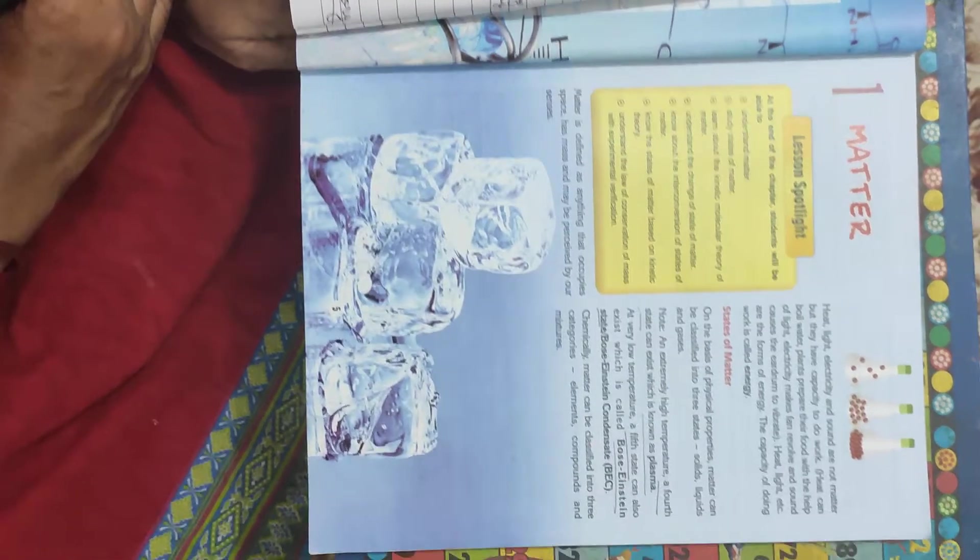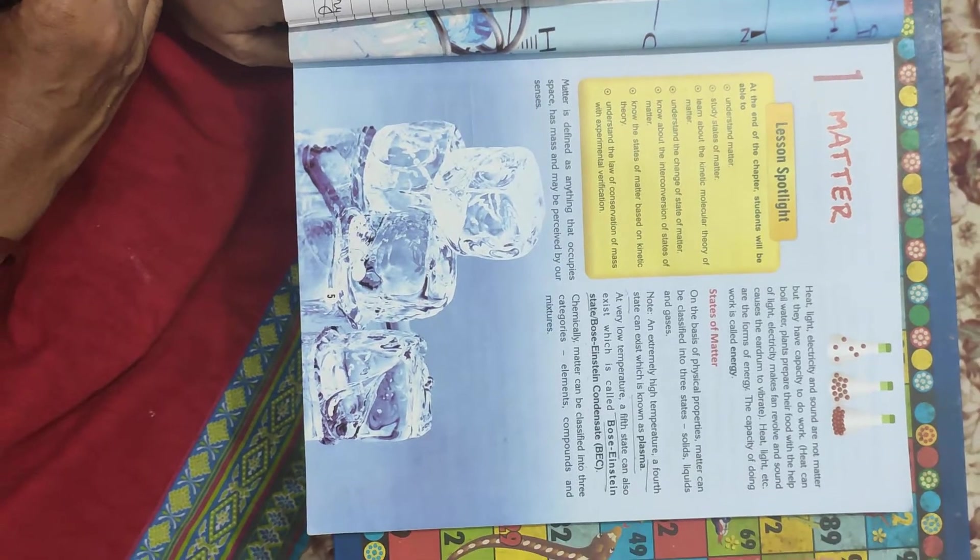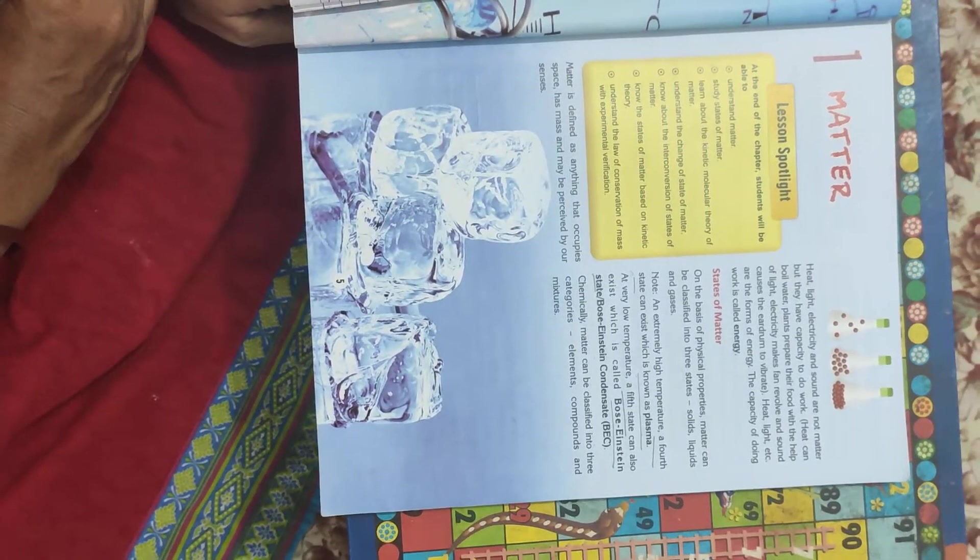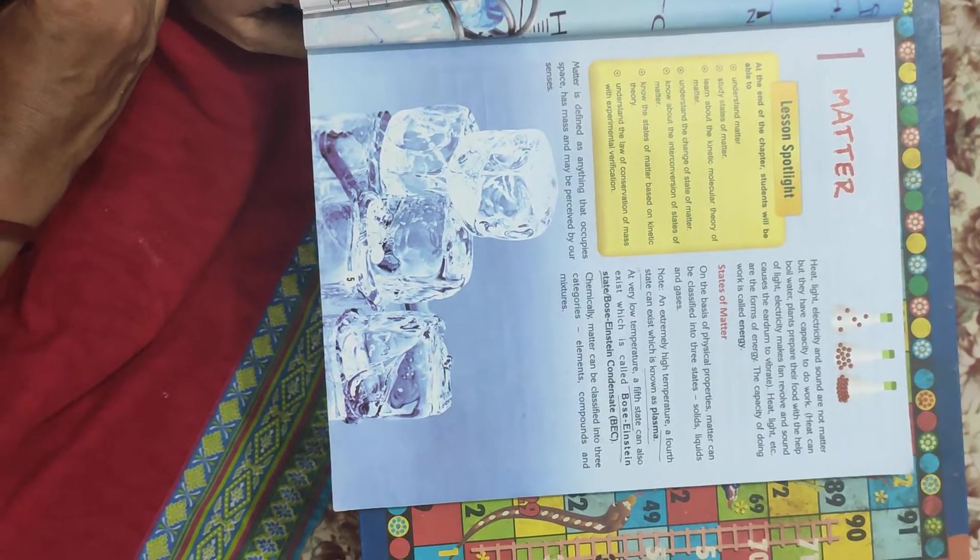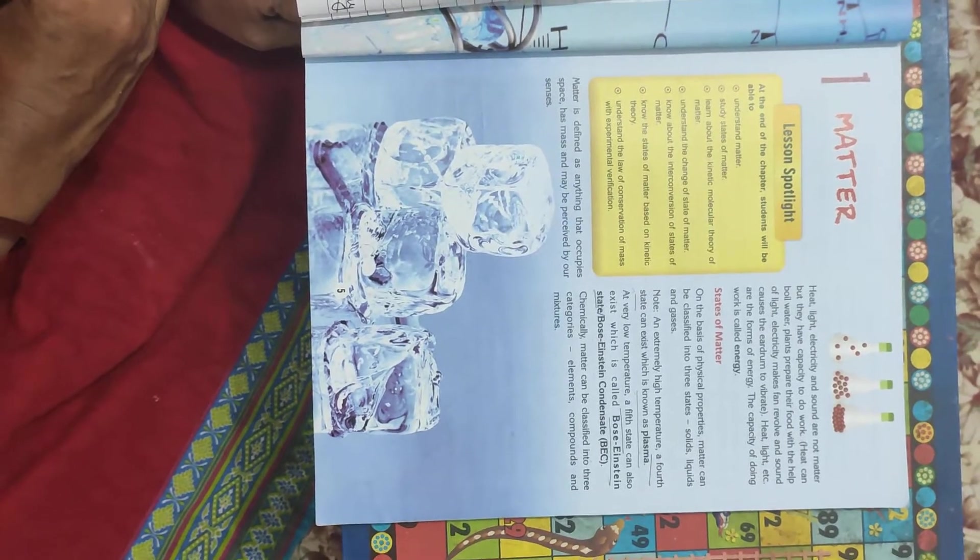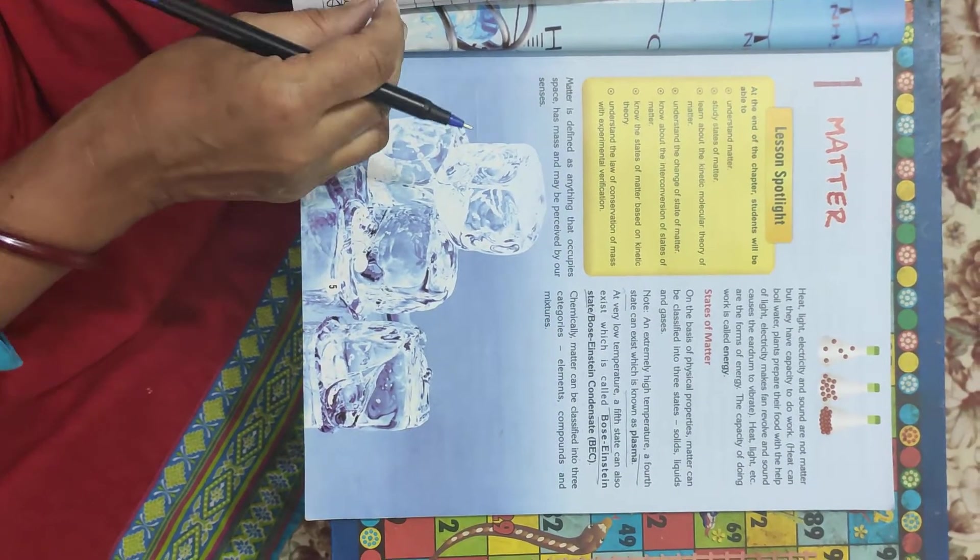Hello students, I am Ranjana Raj, your chemistry teacher. I am going to teach you the first chapter, Matter. So take out your books, copy, pen and pencil. My dear children, are you ready? So let us start.